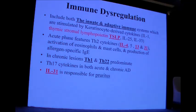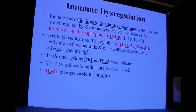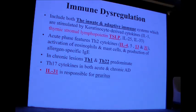The third factor in pathogenesis is immune dysregulation, involving both the innate and adaptive immune systems stimulated by keratinocyte-derived cytokines — most importantly TSLP, the thymic stromal lymphopoietin. The acute phase features mainly T helper 2 cytokines — interleukins 4, 13, and 31 — plus activation of eosinophils, mast cells, and production of allergen-specific IgE. In chronic lesions, T helper 1 and T helper 22 predominate, while T helper 17 occurs in both phases, and interleukin 31 is responsible for pruritus.